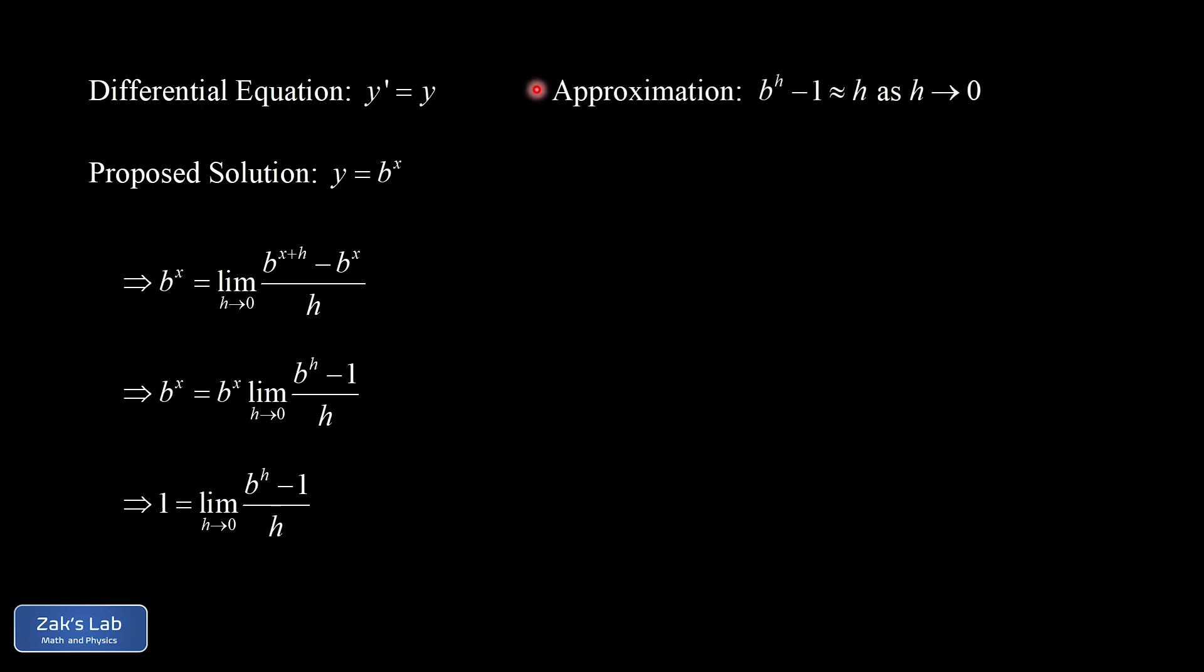So we make an approximation, b to the h minus 1 is approximately equal to h, provided h is very, very small. In other words, as h goes to 0.